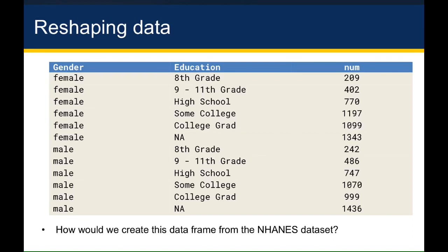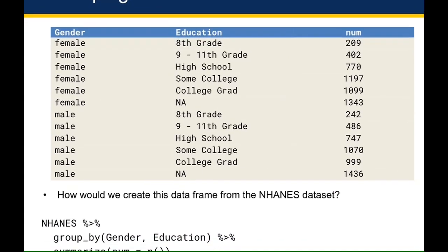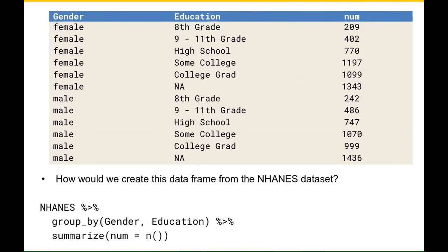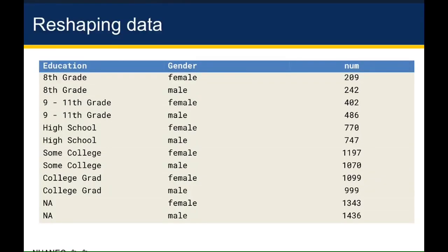The way we create this from the raw NHANES dataset is we start with NHANES, group by gender and education, and then summarize by counting the number of rows using the n() helper function, assigning it to a column named num. Notice we chose to group by gender first and then education. One problem with grouping by gender first is that because the data is sorted by gender first, it's hard to compare college education for men and women because they are multiple rows apart from one another.